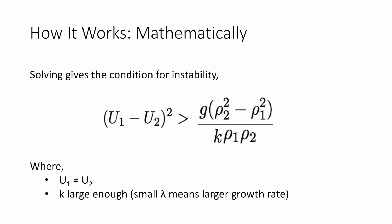Solving the time-dependent Bernoulli equation gives the velocity of the lighter fluid minus the velocity of the heavier fluid squared, which is greater than gravity times the density of the heavier fluid squared minus the lighter fluid squared, all over k times the densities, where k is the wave number.